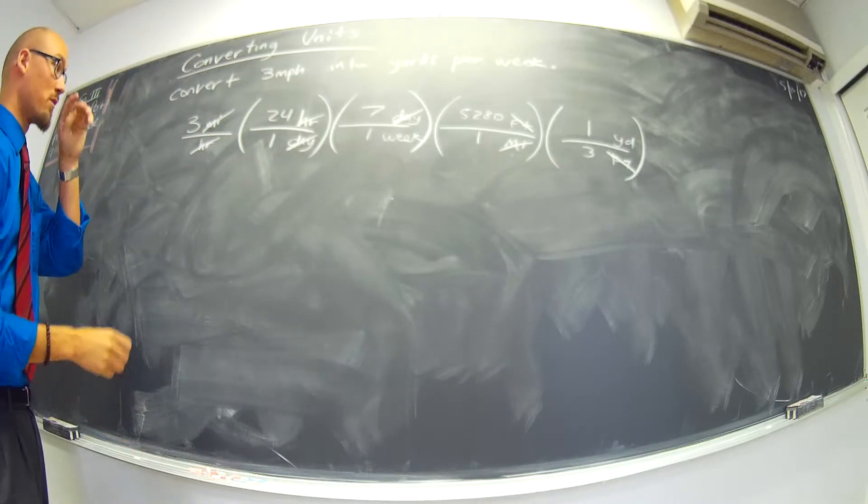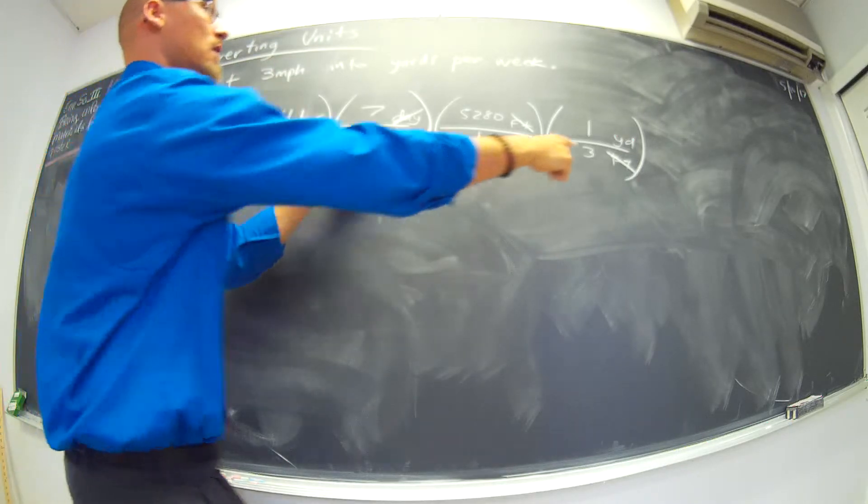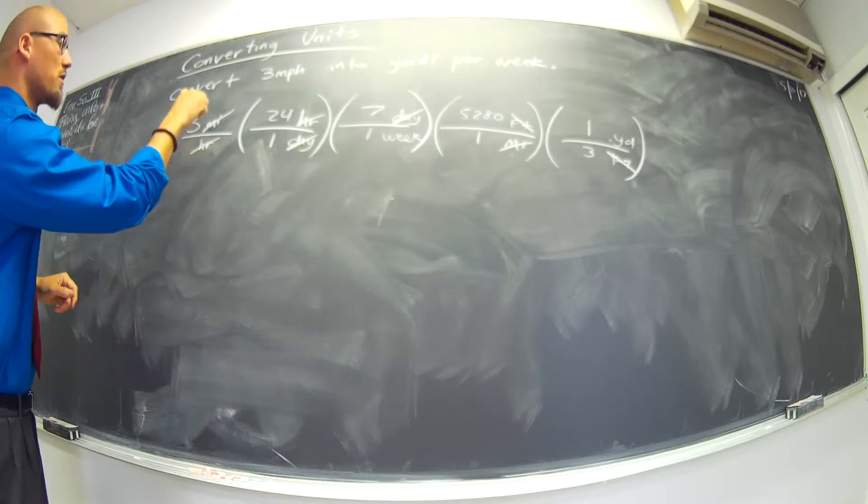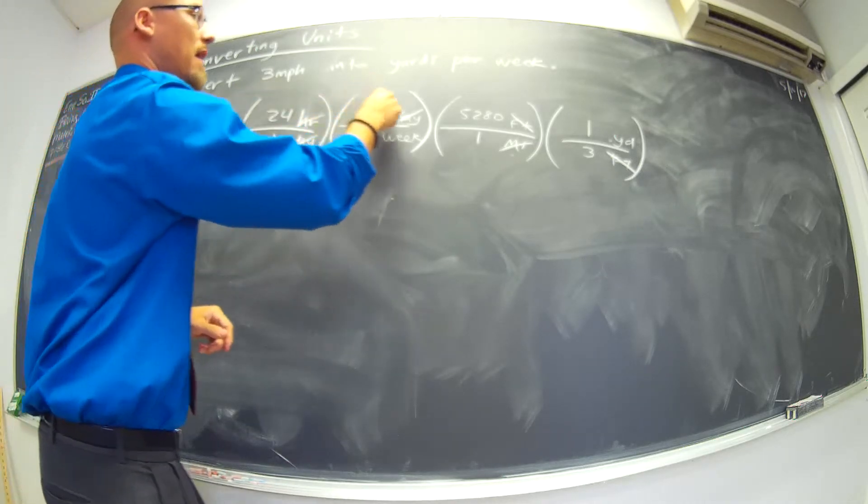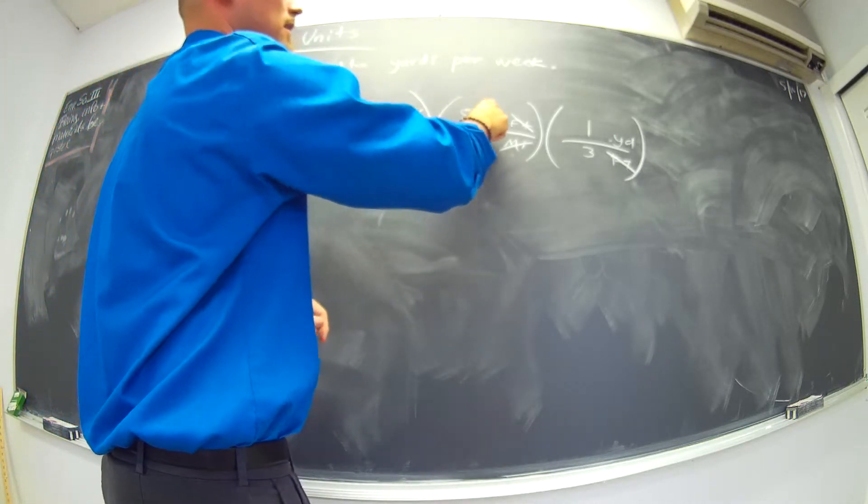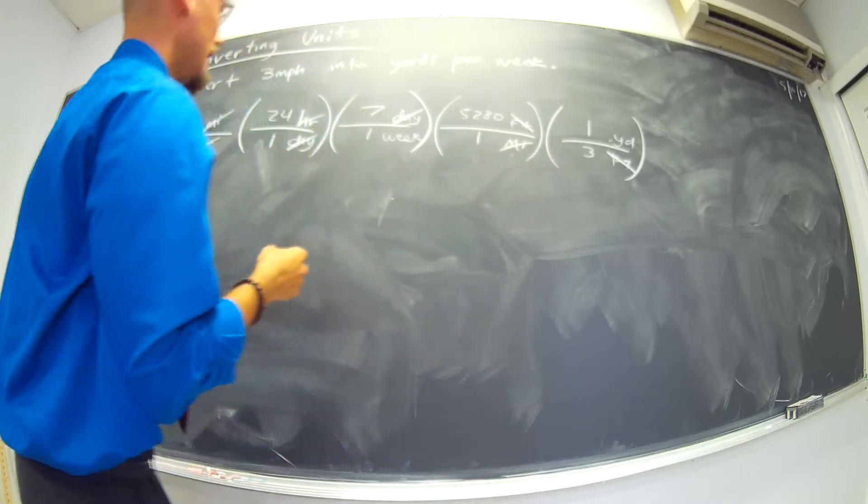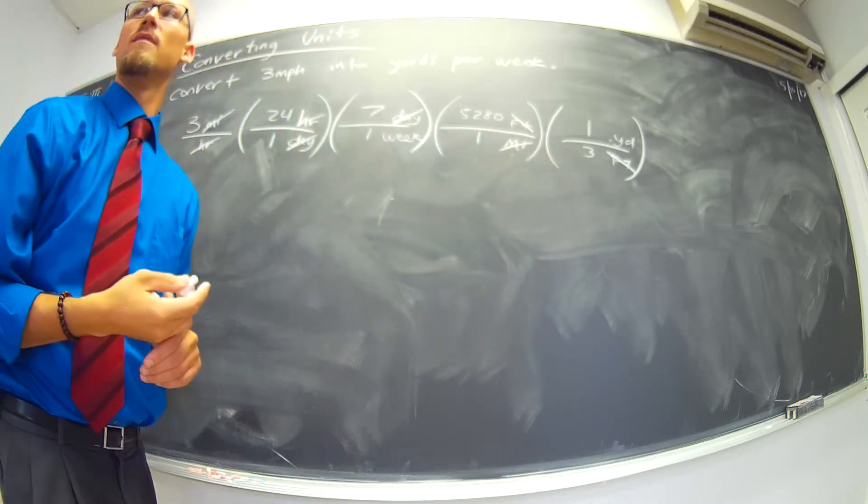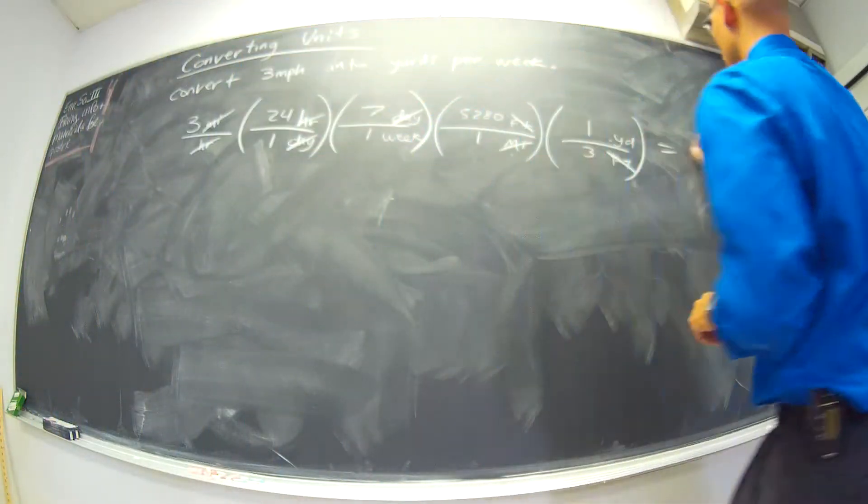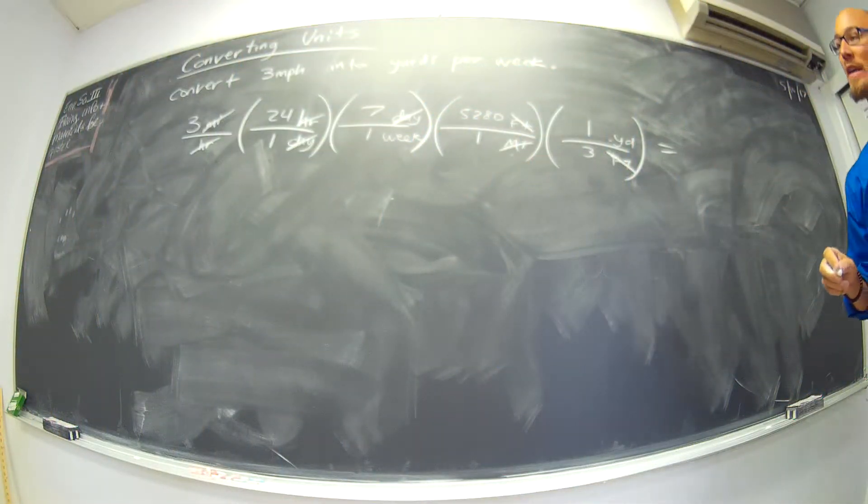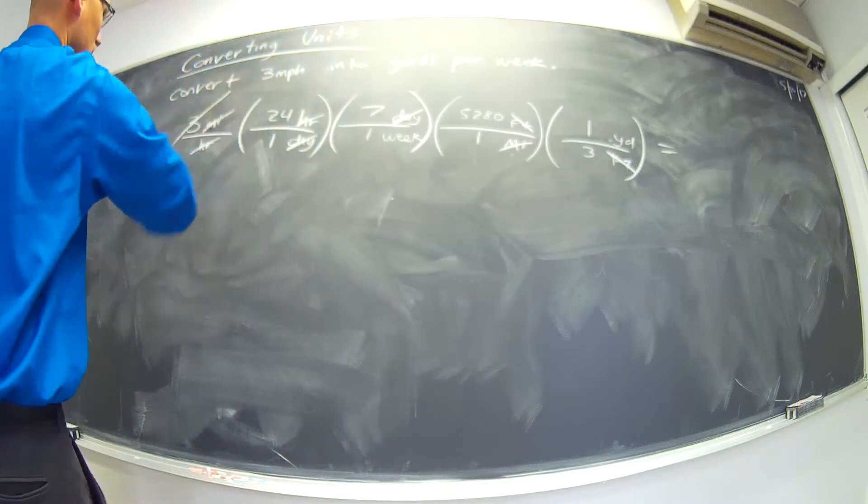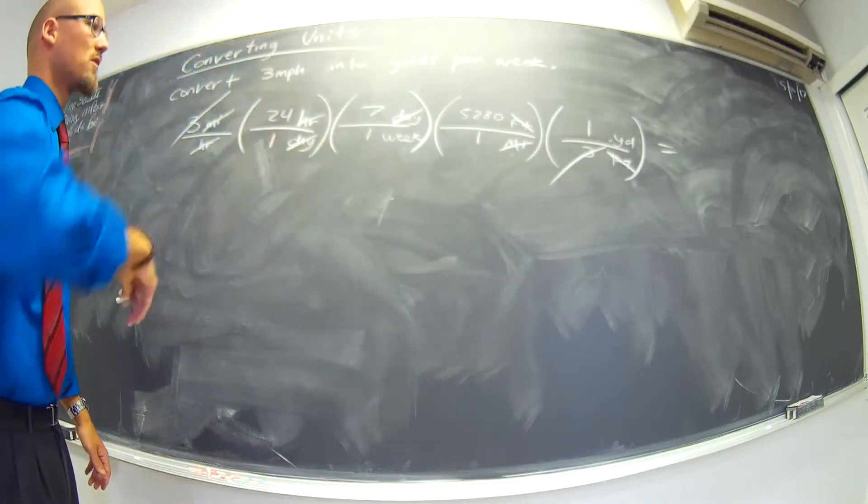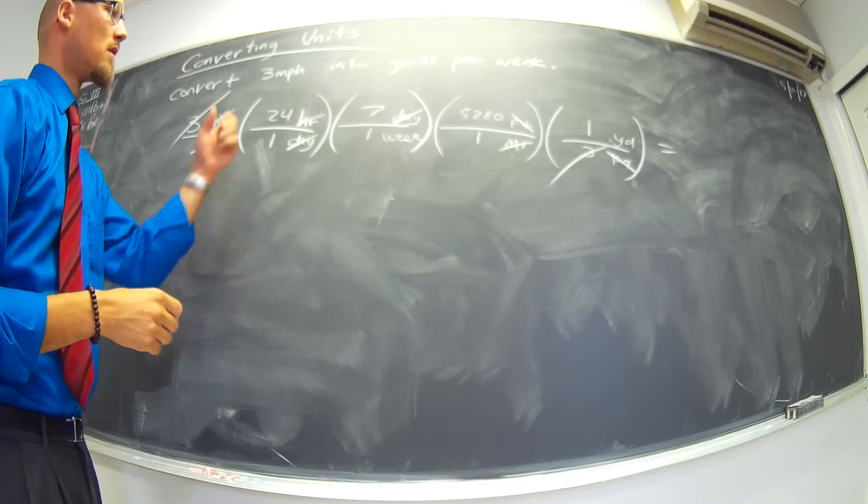And then the remaining units are yards and weeks. Wait. So we'll do three times 24 times seven times 5,280 times one. Yeah. And then we'll divide by three. Well, we'll divide by three. Five, two, eight. Well, the threes can just cancel. Oh, we can cancel the threes. Oh, you're a genius. Three divided by three. All the ones are who cares.